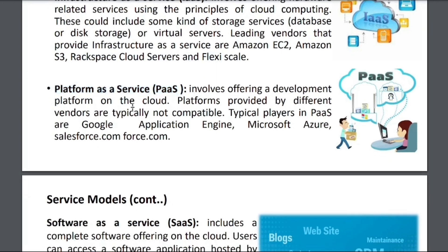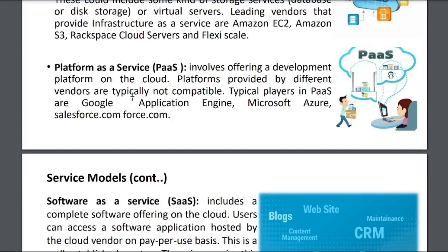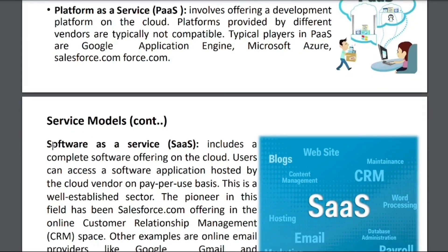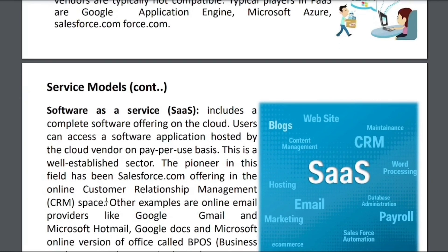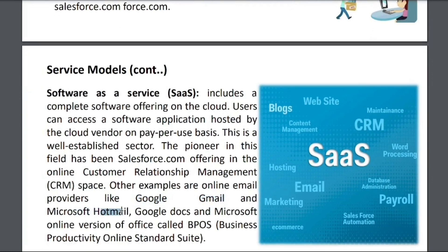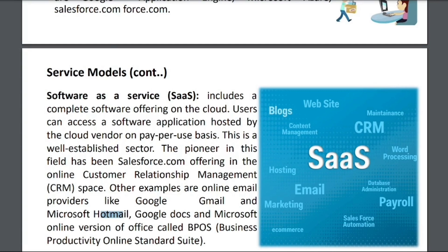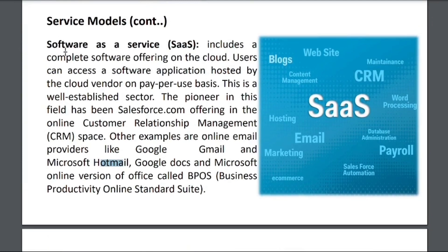Platform as a Service involves offering a development platform on the cloud. Just as PM Networking is a platform for uploading videos, when we need to deploy our projects we use engines like Microsoft Azure, AWS, and Google App Engine as cloud service platforms. Software as a Service refers to software available and deployed on the cloud — for example, Gmail, Google Docs, and Hotmail; every software we use through internet browsers is Software as a Service.